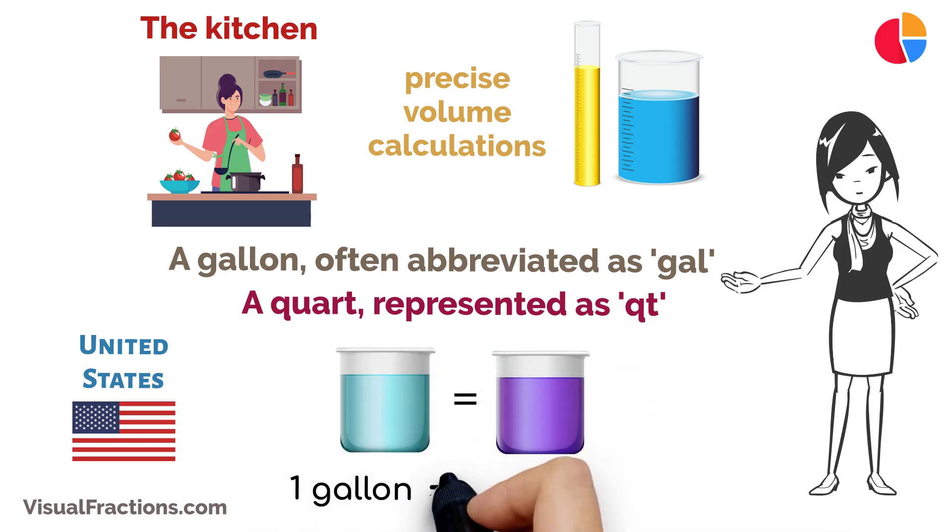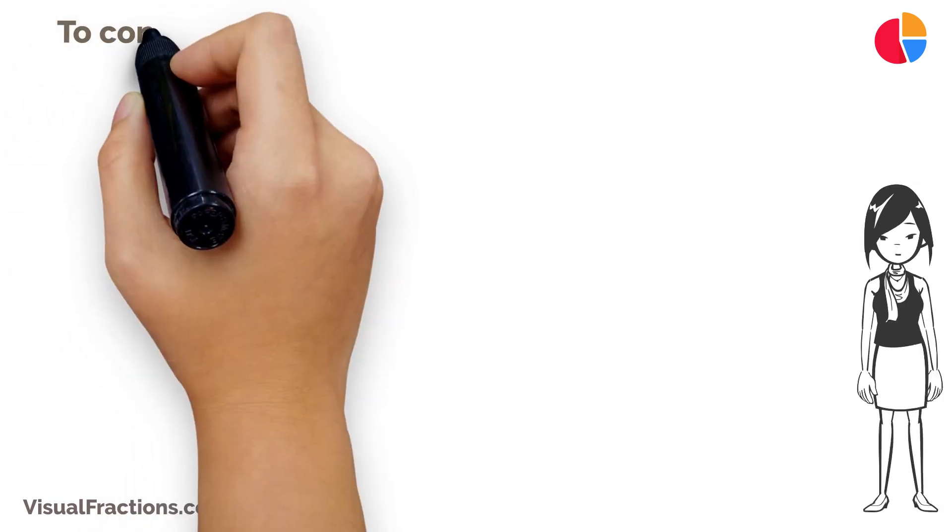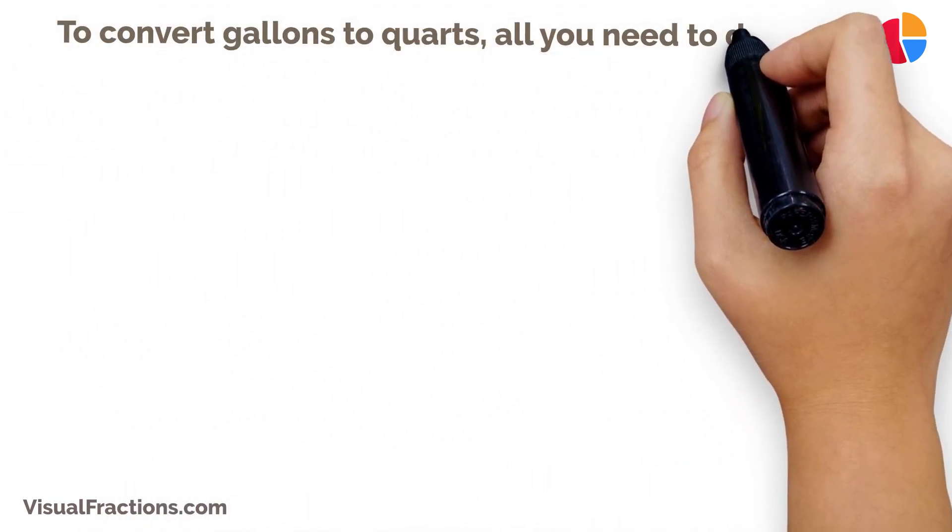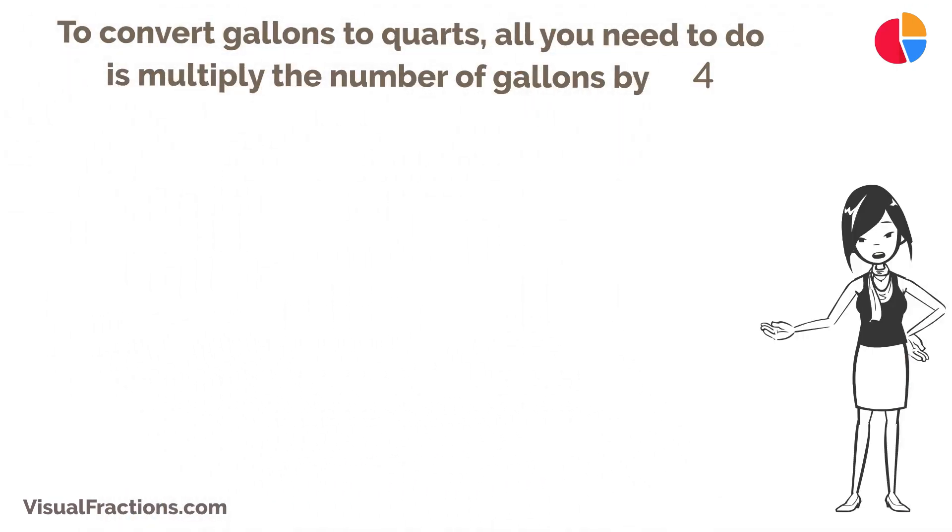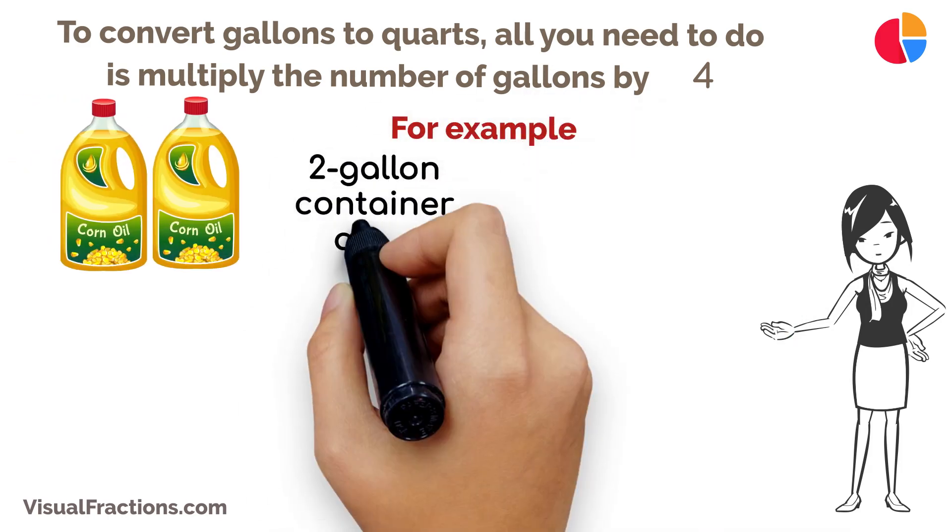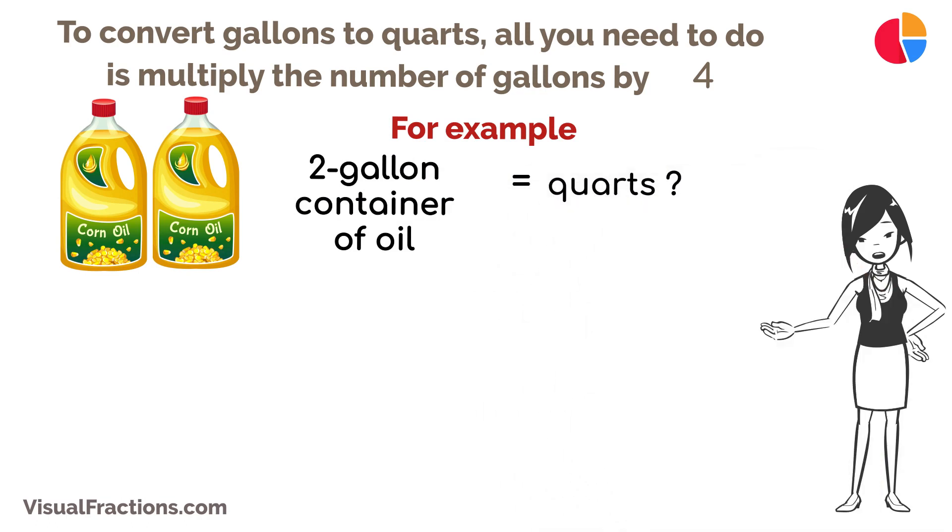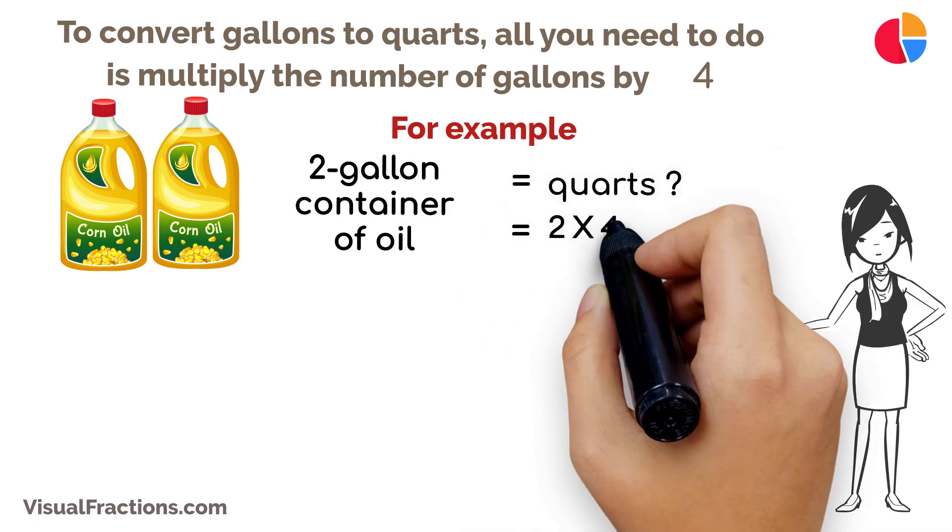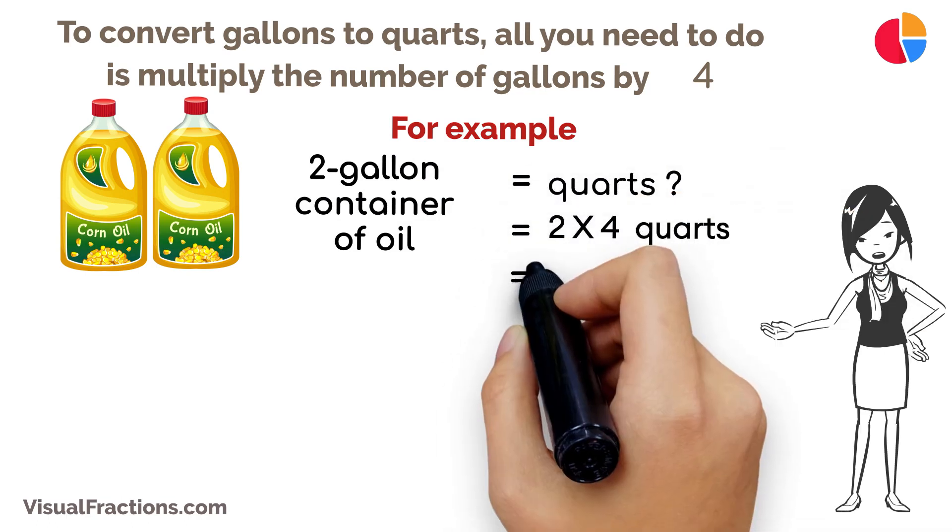Here's the key part: one gallon is equal to four quarts. To convert gallons to quarts, all you need to do is multiply the number of gallons by four. For example, if you have a two-gallon container of oil and you want to know how many quarts it contains, simply multiply two gallons by four—that's a total of eight quarts.